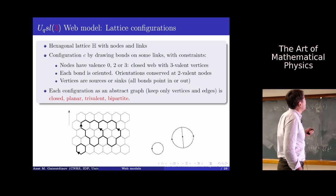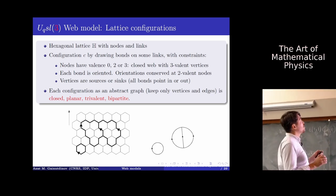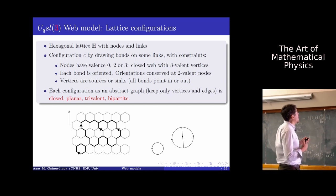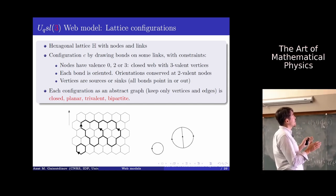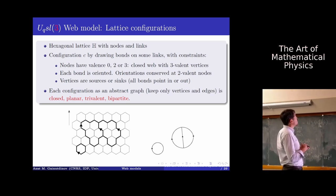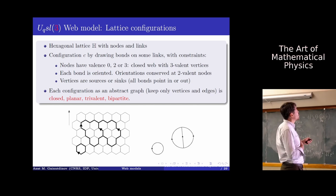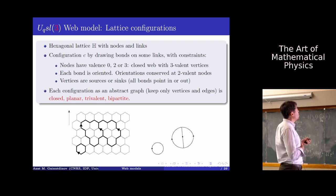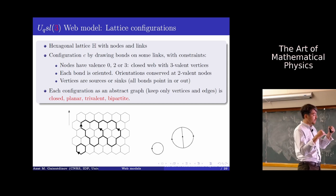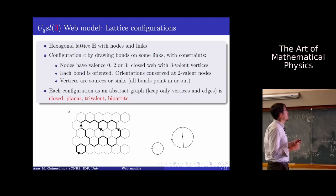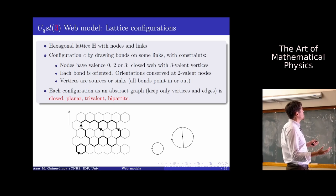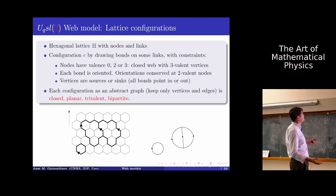We work on the hexagonal lattice, referring to its vertices and edges as nodes and links. A configuration is constructed by drawing bonds on some links with certain constraints. Nodes have valence 0, 2, or 3 — the valence-3 case is new compared to loop models, giving closed webs with 3-valent vertices. Each bond is oriented, orientations are conserved at 2-valent nodes, and 3-valent vertices are either sources or sinks (all bonds point in or all point out). In graph-theoretic terms, each configuration is a closed, planar, 3-valent, bipartite graph.